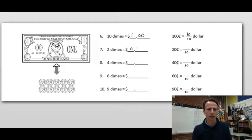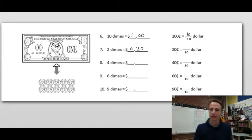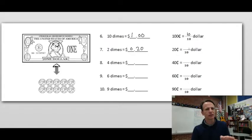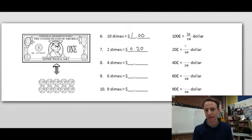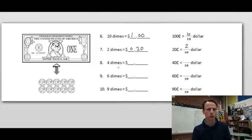Two dimes: that's not one whole — it is two tenths, and we have no hundredths. That's 20 cents. But be careful: 20 tenths would be two dollars — that's 20 dimes. We only have two dimes, so that's two tenths of a dollar. Four dimes: that's 40 cents, which is 40 hundredths of a dollar, but it's four dimes — four tenths.